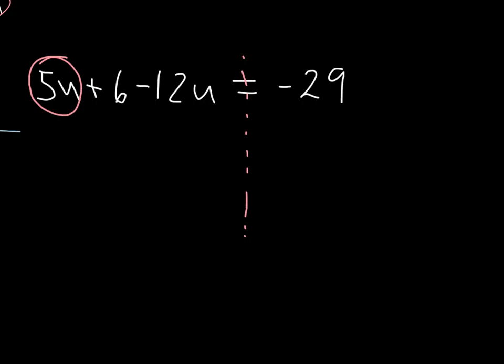I have the 5u, the variable term, and I have the minus 12u. See how I include the sign in front of each term? The 5u is a positive 5, the 12u is a negative, so if I combine those together I get a negative 7u, and then I bring down the rest.